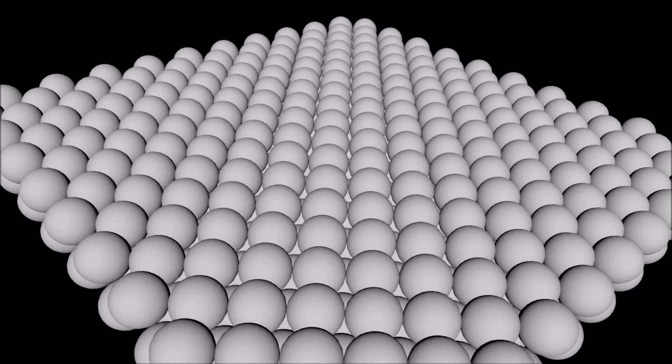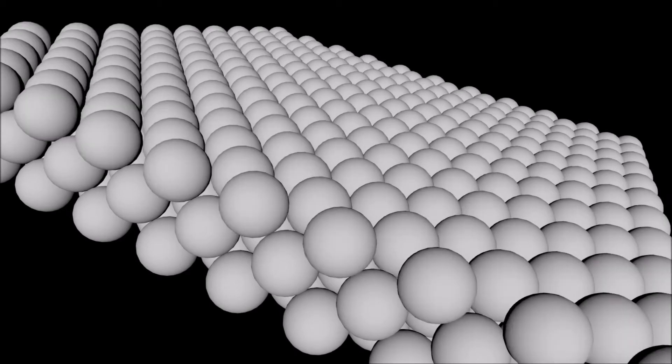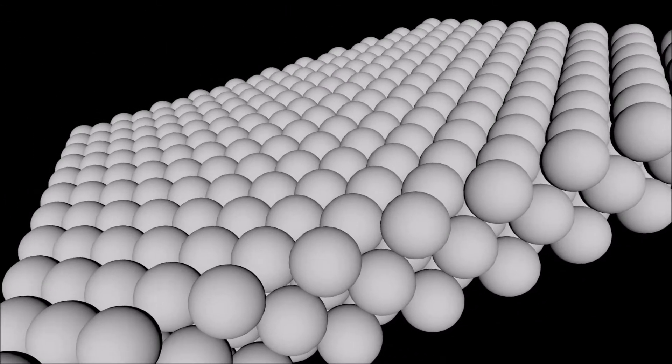As seen already, one way of generating the close packing of spheres arrangement is to stack parallel square planes on top of each other. For this to be possible, a translation is required between planes.